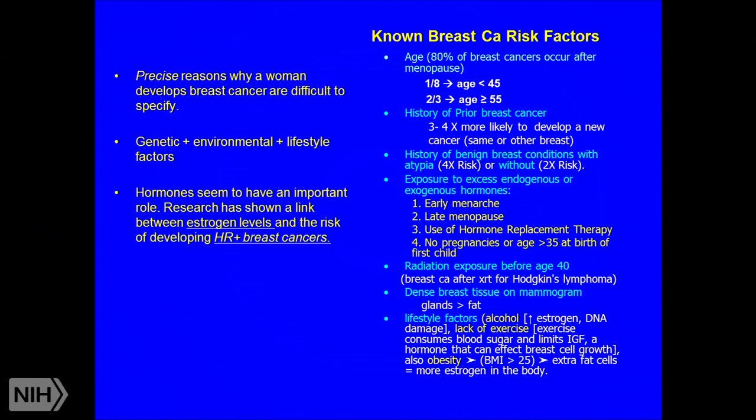Dense breast tissue on mammograms is also a risk factor. If your mammogram shows dense breast tissue, it means you have more glands rather than fatty tissue, putting you at higher risk of developing breast cancer. Additionally, dense breast tissue makes it harder to visualize lesions on the mammogram — cancer could be lurking and not be seen.